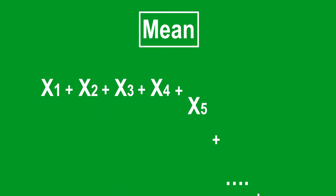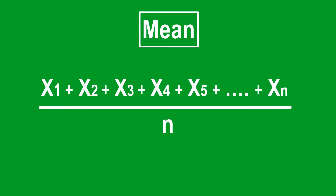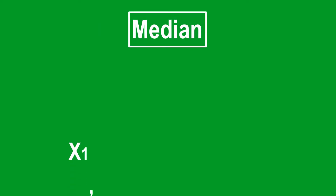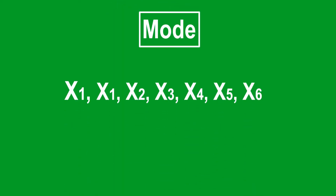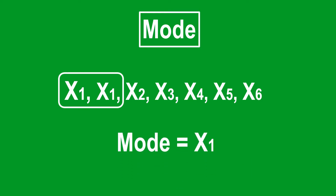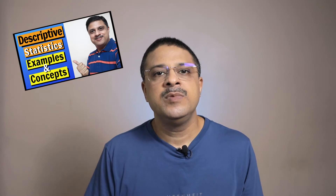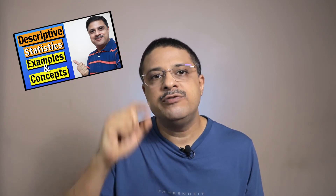Before we proceed, here is a quick recap of what these measures of central tendency mean. Mean is the arithmetic average of all values, where we divide the sum of all values by the number of observations. Median is the middle value when all observations are lined up in ascending or descending order. And mode is the value with the most number of occurrences. To get a detailed understanding of descriptive statistics, you should watch the linked video.